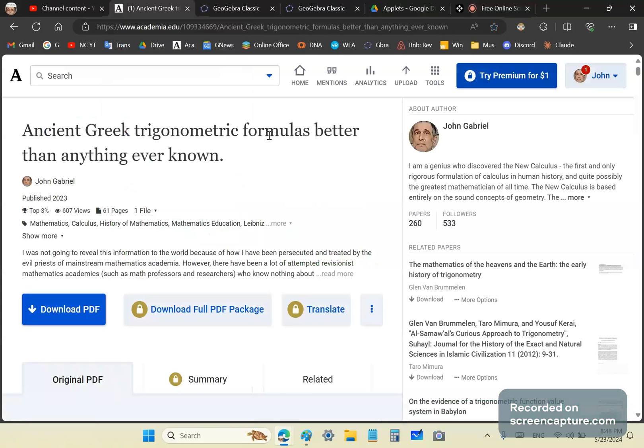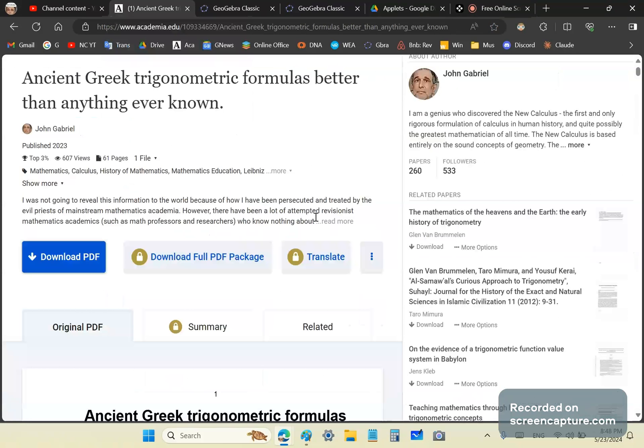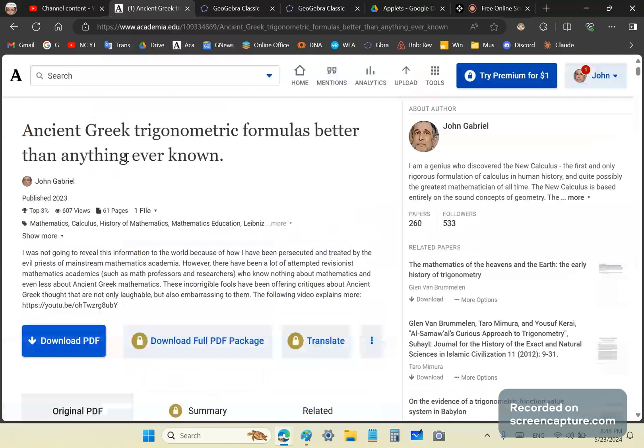Well the truth is I called them ancient Greek trigonometric formulas, but they're not really ancient Greek. They're John Gabriel trigonometric formulas and they're better than anything ever known. I maintain though that the ancient Greeks had sufficient knowledge to come up with these formulas, even though they didn't and there's no record of them anywhere in Greek material or scrolls.